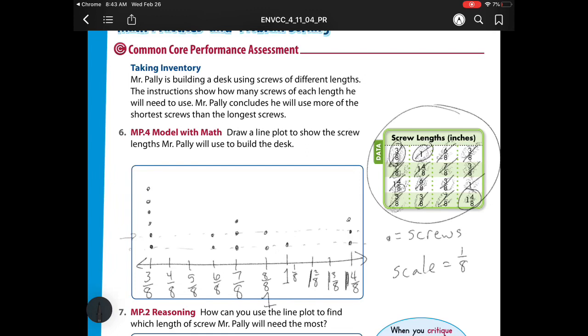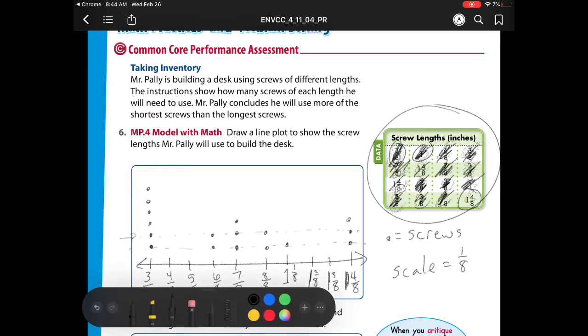So let's check again. I have 3 eighths - I count 6 of those. I have 6 eighths - I have 2. 7 eighths - I have 3. My 1 whole - I have 2. My 1 and 1 eighth, do I have any of those? I don't. So that's where I made my mistake because I added an extra one.